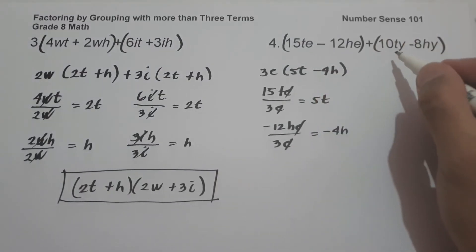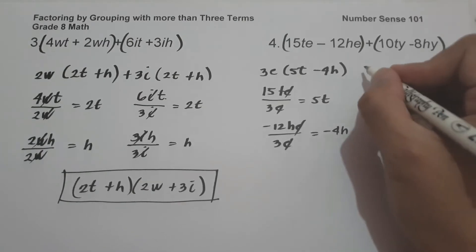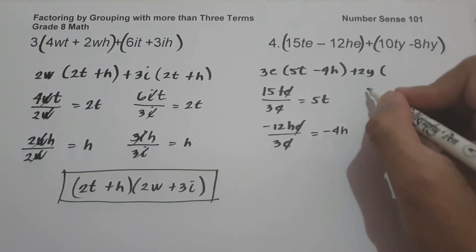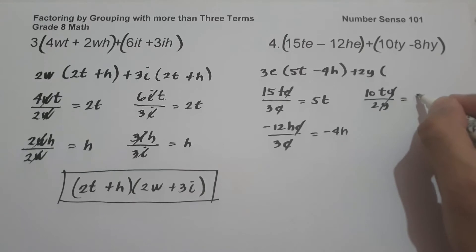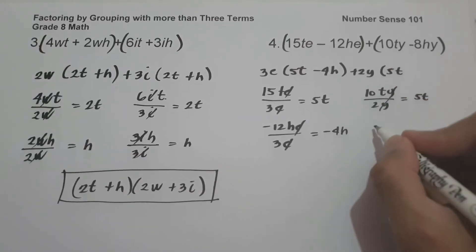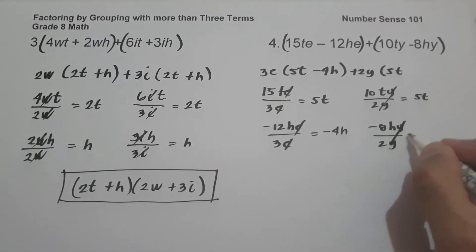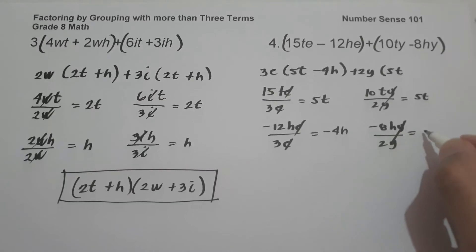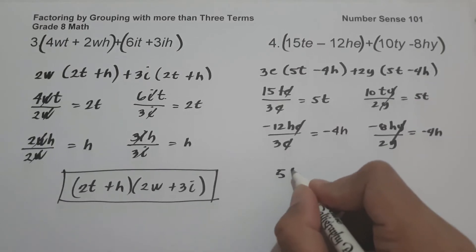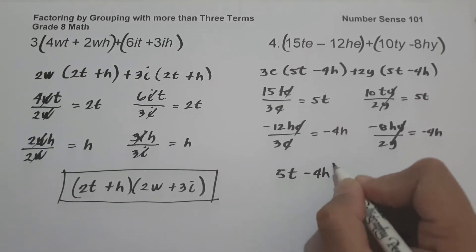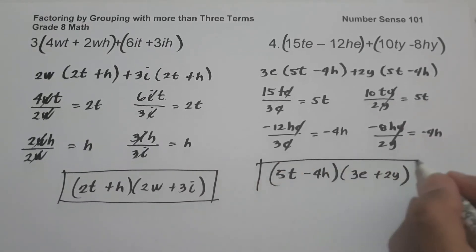On the other side, the GCF of 10TY and negative 8HY is 2Y. So 10TY divided by 2Y: cancel Y, giving 5T. Then negative 8HY divided by 2Y: cancel, negative 8H divided by 2 gives negative 4H. Therefore, the answer is (5T minus 4H) times the quantity (3E plus 2Y).